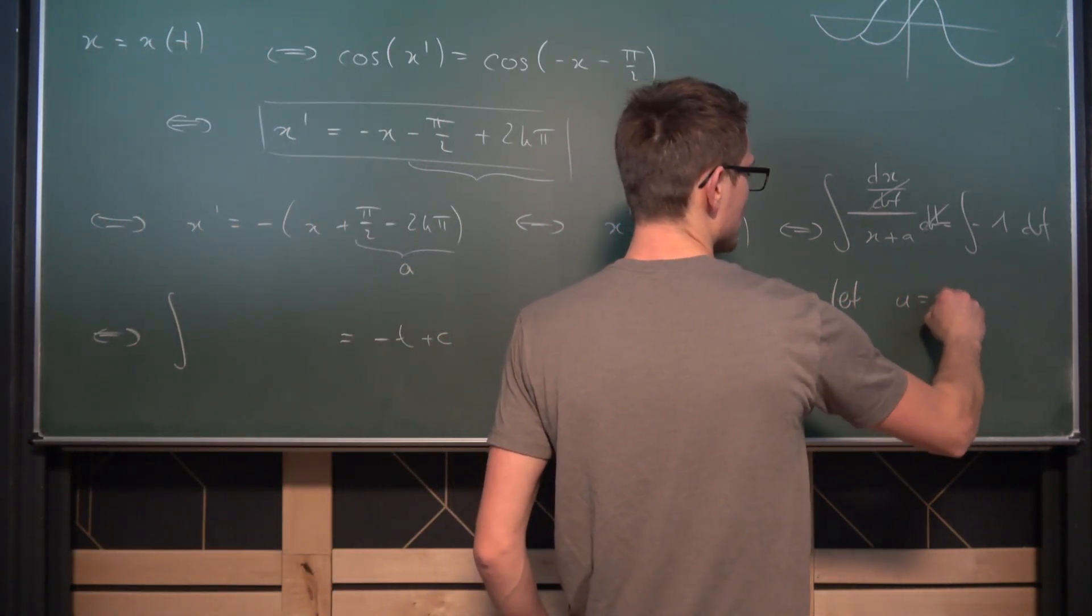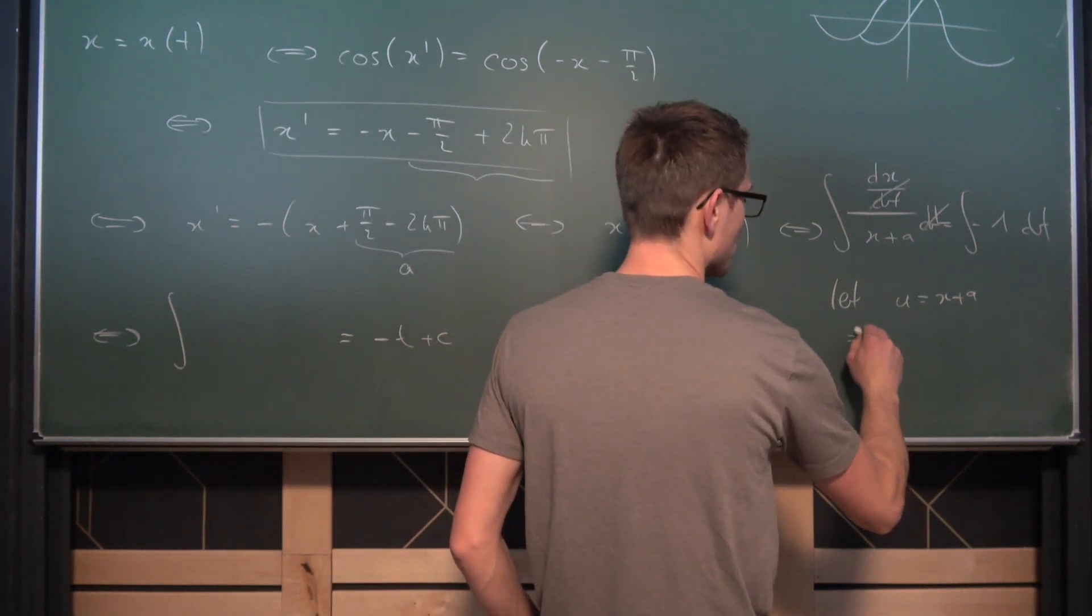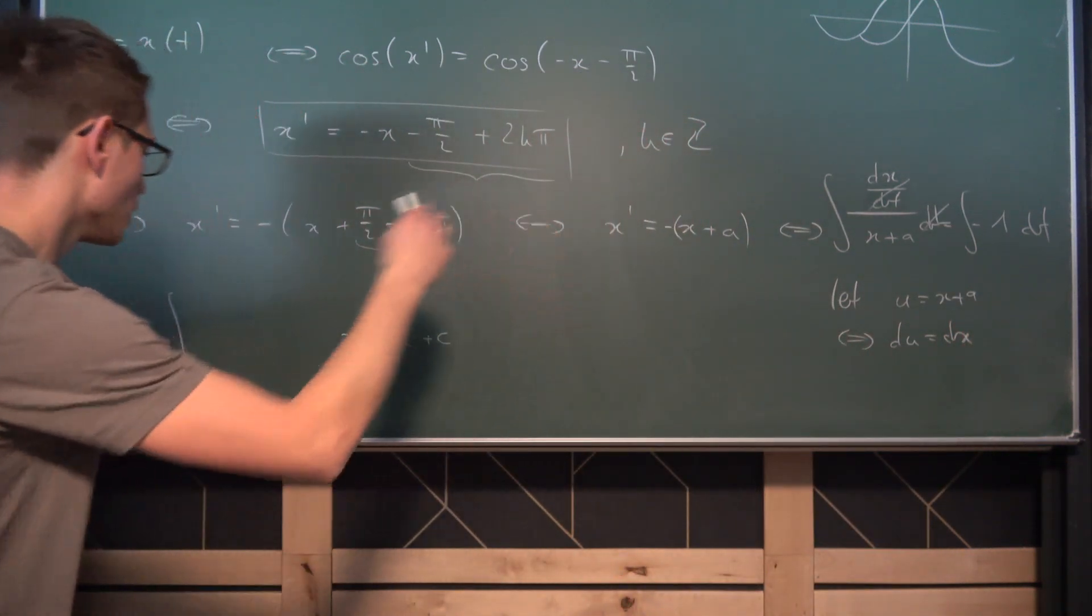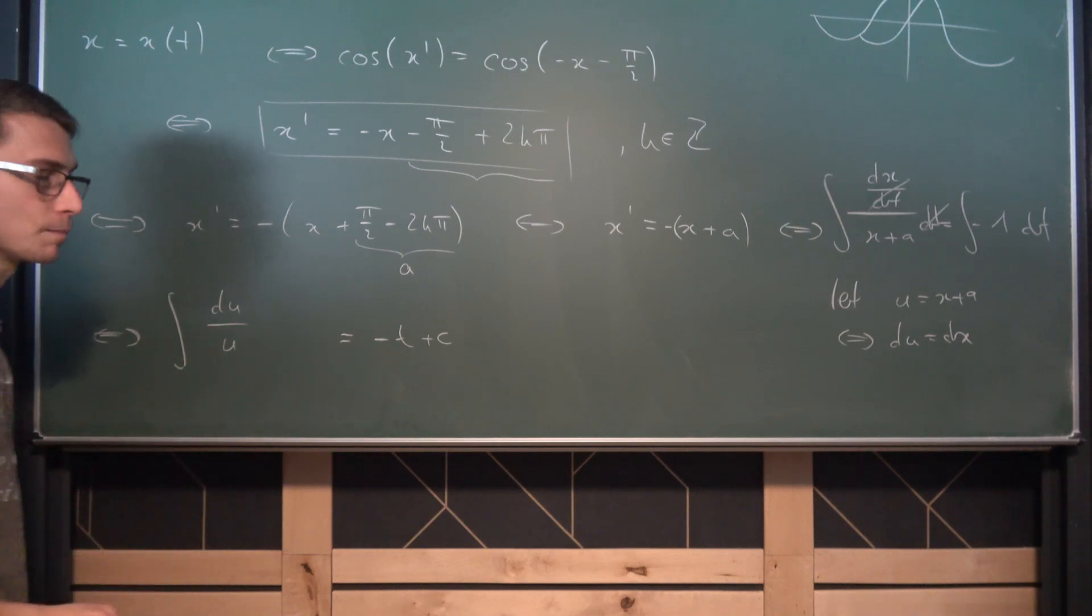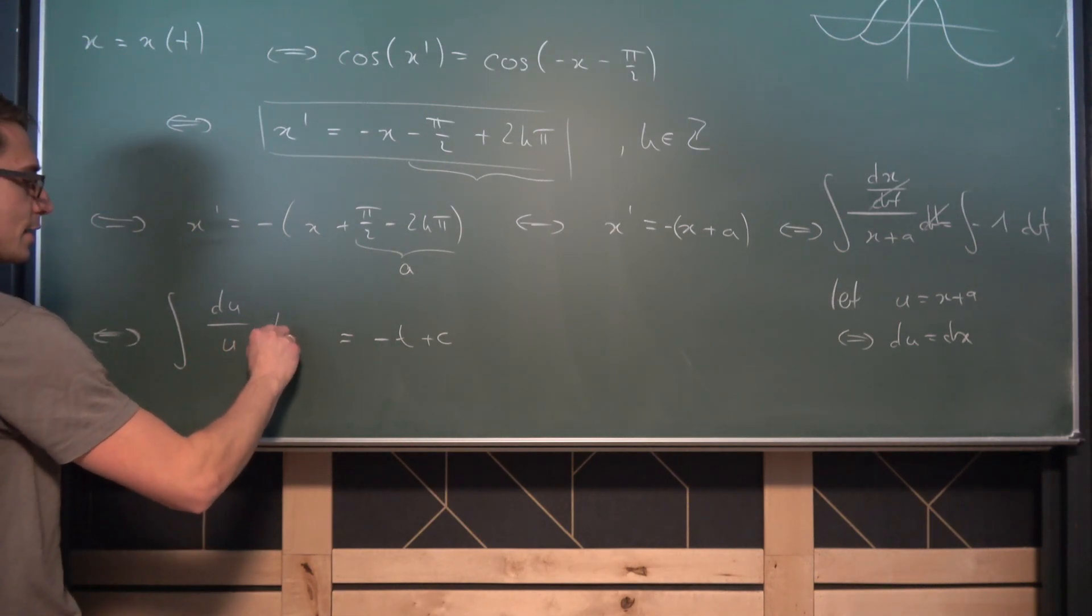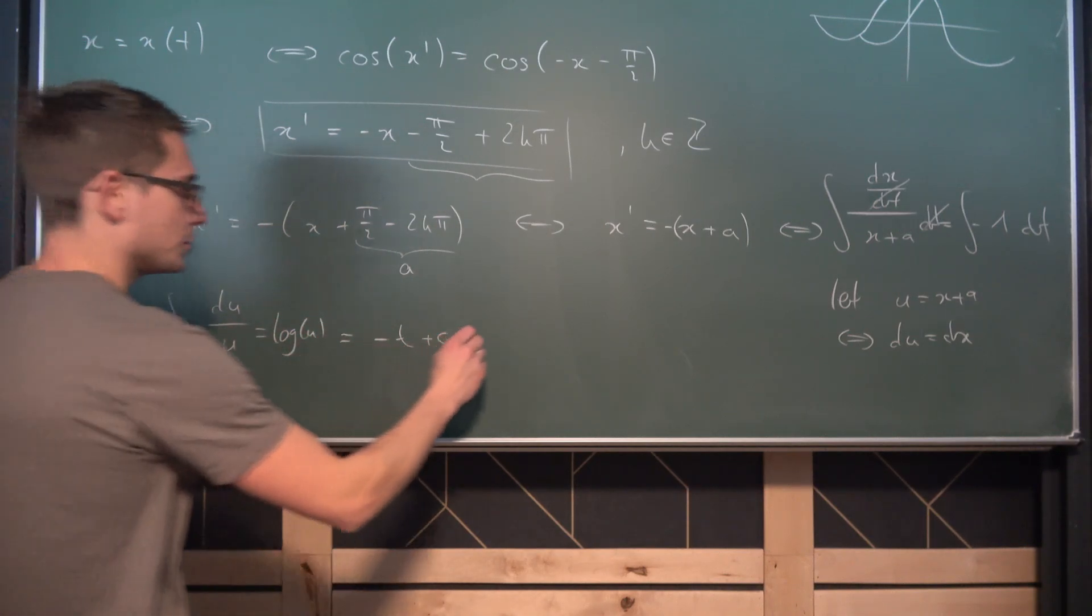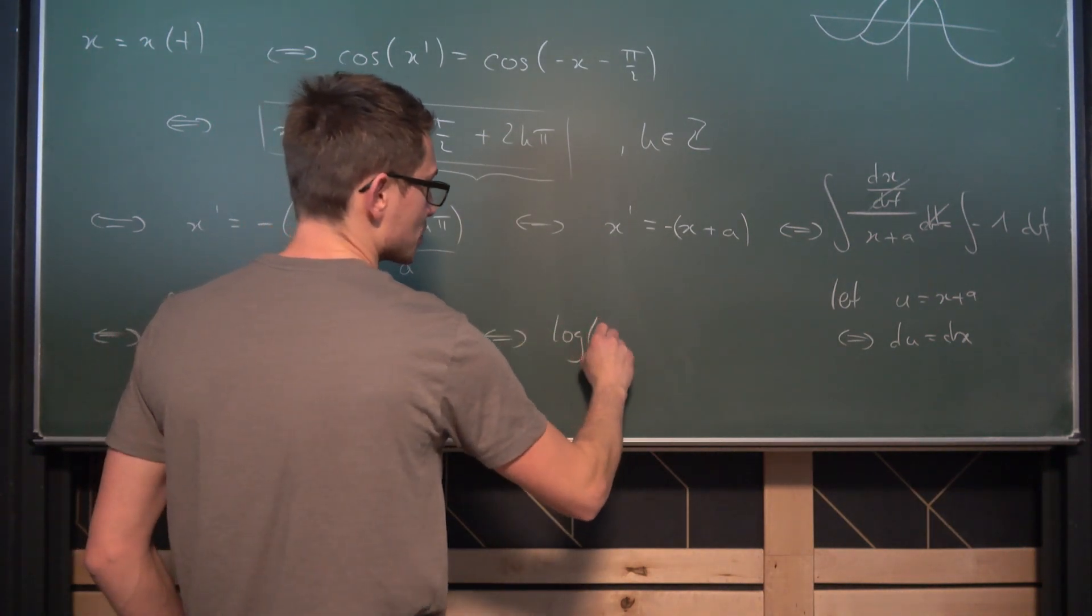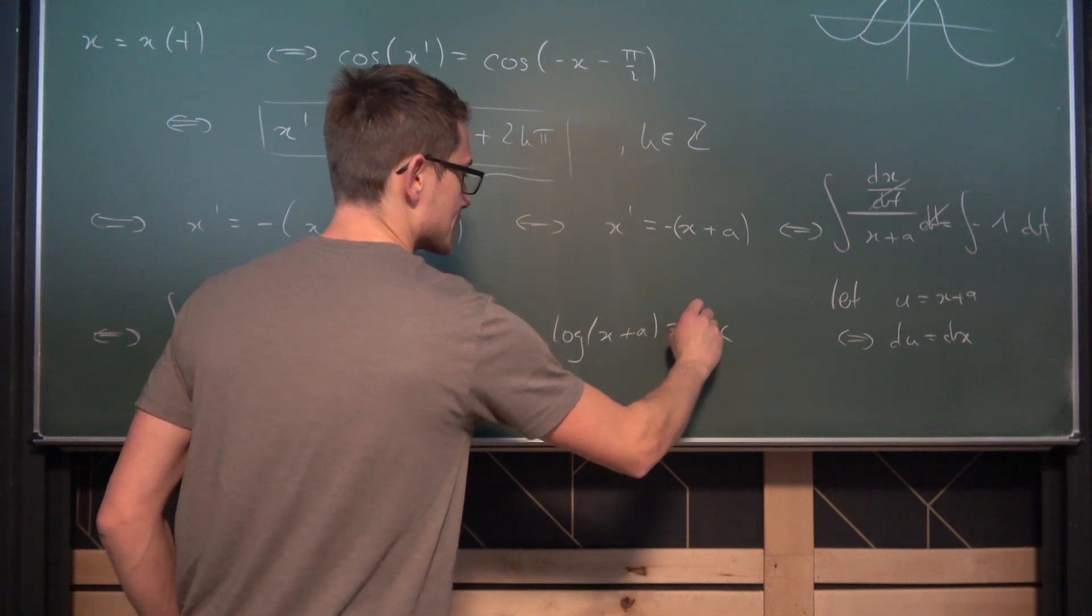So let u be equal to x plus a by implicitly differentiating both sides. We are going to end up with du being equal to dx overall. So if we were to plug this in we are going to get du divided by u. And that is really easy to solve because this right here is just a natural log of u. But we need to resubstitute. If we do so we are going to end up with the natural log of and u is x plus a, is equal to negative t plus c.